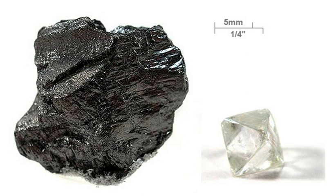Carbon is also found in methane hydrates in polar regions and under the seas, with various estimates putting this carbon between 500 and 3,000 Gt. In the period from 1751 to 2008, about 347 gigatons of carbon were released as carbon dioxide to the atmosphere from burning fossil fuels; another source puts the amount added to the atmosphere since 1750 at 879 Gt, with almost 2,000 Gt going to the atmosphere, sea, and land. Carbon is a constituent of very large masses of carbonate rock — limestone, dolomite, marble and so on.